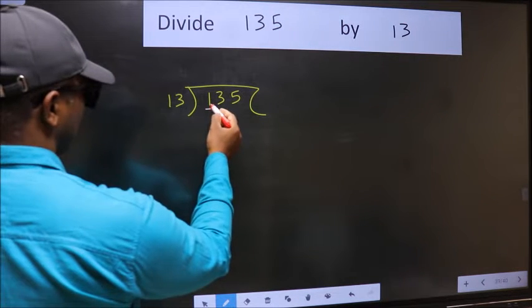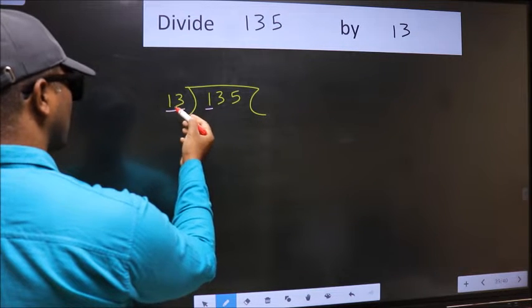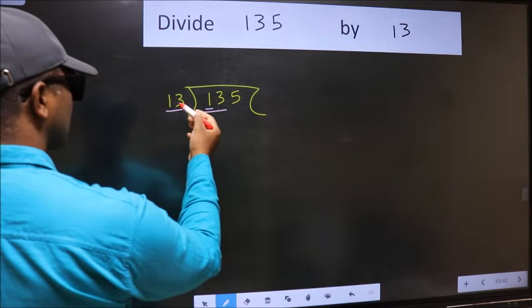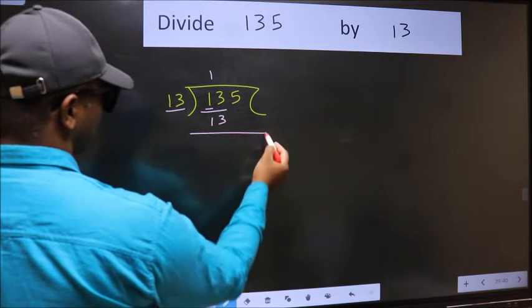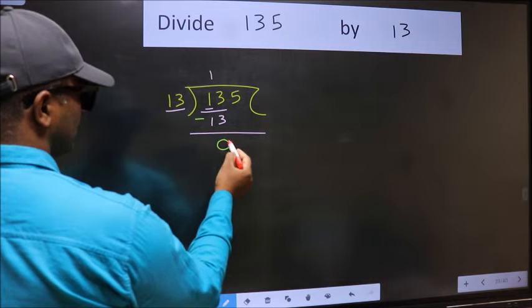Here we have 1 and here 13. 1 is smaller than 13. So we should take two numbers, 13. When do we get 13 in 13 table? 13 once 13. Now we should subtract. 13 minus 13 is 0.